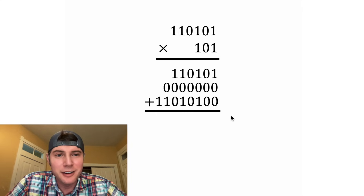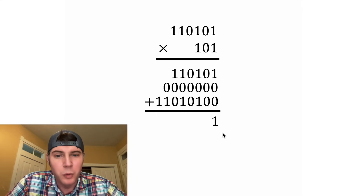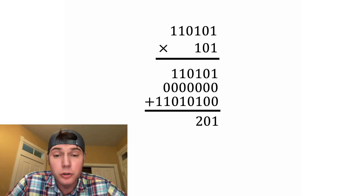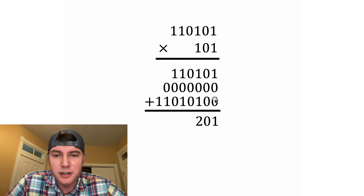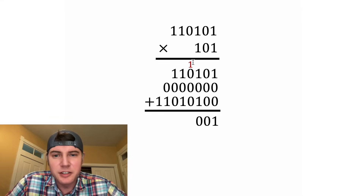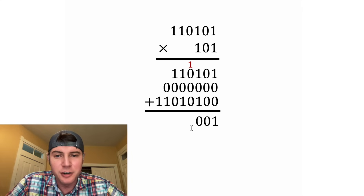Now we just add these together. 1 plus 0 plus 0 is 1. 0 plus 0 plus 0 is 0. 1 plus 1 gives us 2, but we can't have a 2 in binary, so this will become a 0, and we're going to carry a 1 over to the next place, because a 1 over here is equal to a 2 over here. Next, 1 plus a bunch of 0s is 1.